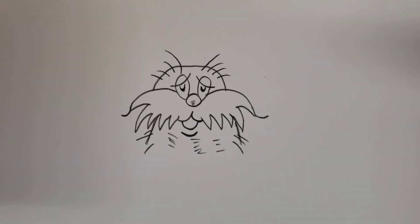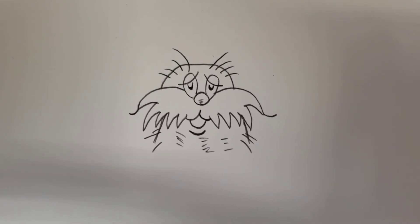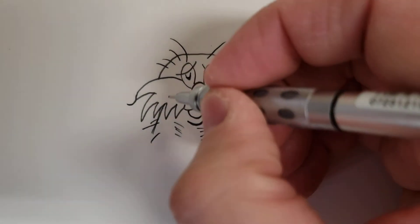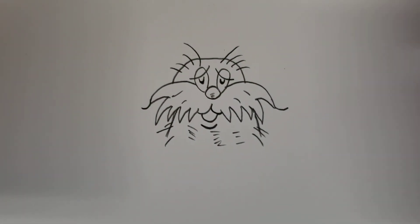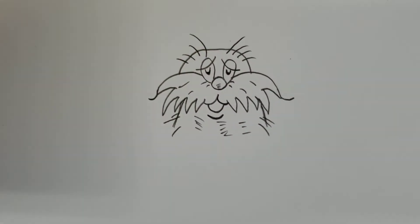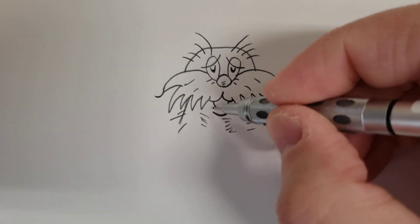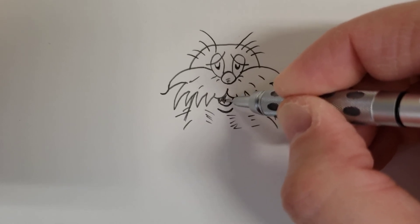There you go, you have the Lorax. If you want to, you can come back and add a couple lines to the mustache. You can add a couple lines around the eyes, and if you want you can draw the tongue and color the mouth in.